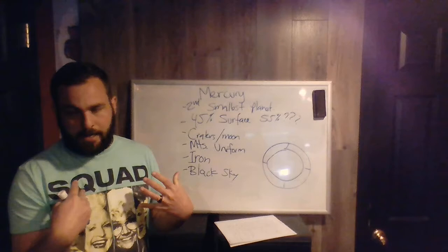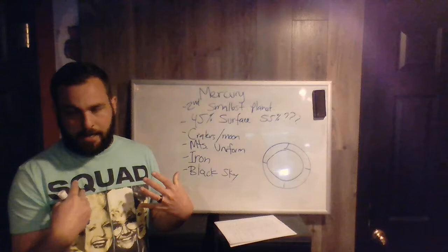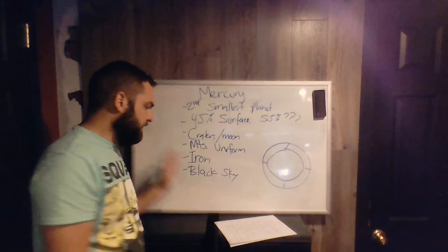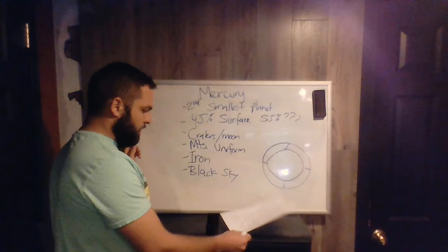Obviously I haven't been to the Moon and nor have you guys, but if you were there, it would be very bright and white, reflective, and then against the background it would be all black. Same thing with Mercury — at least that's what scientists think. You'd be able to see a lot of stars.